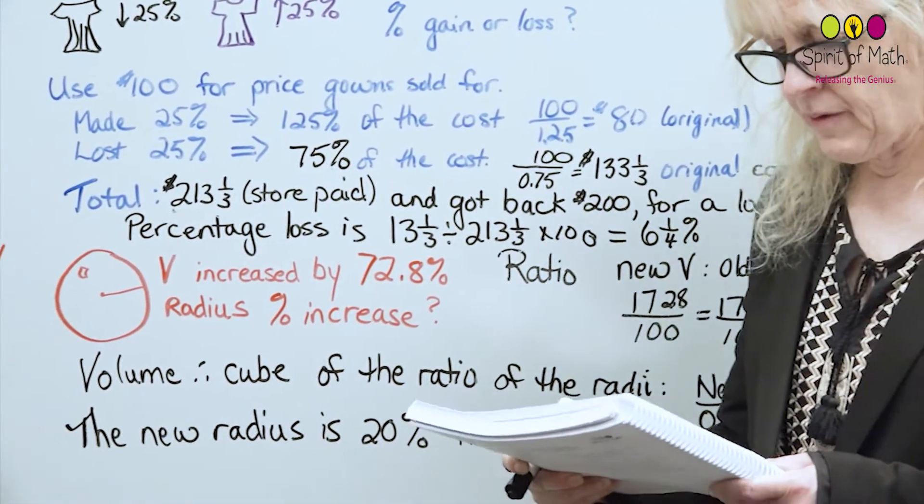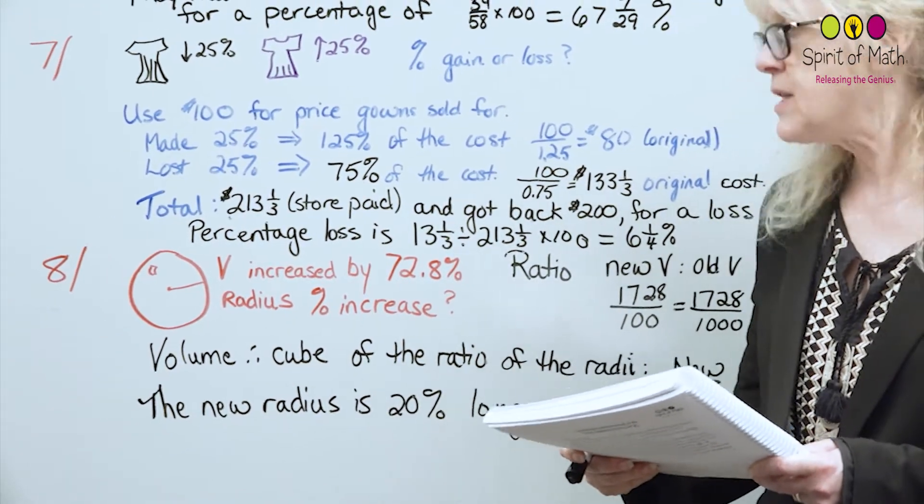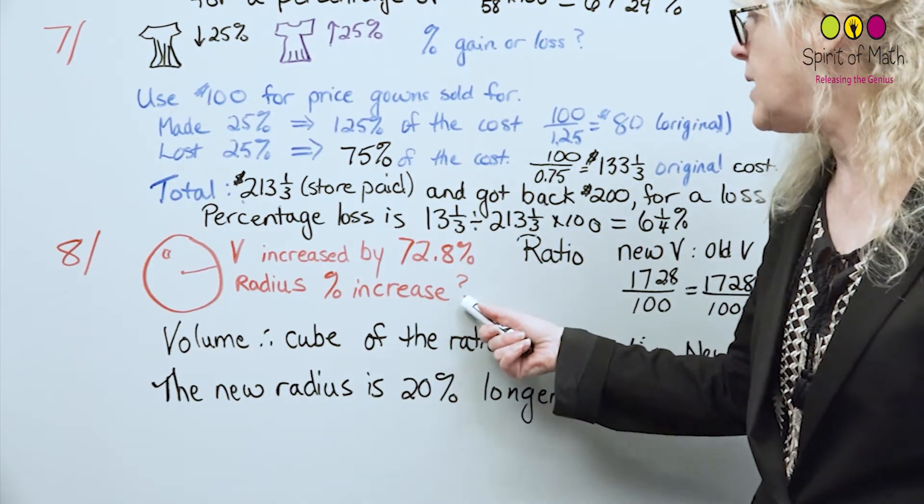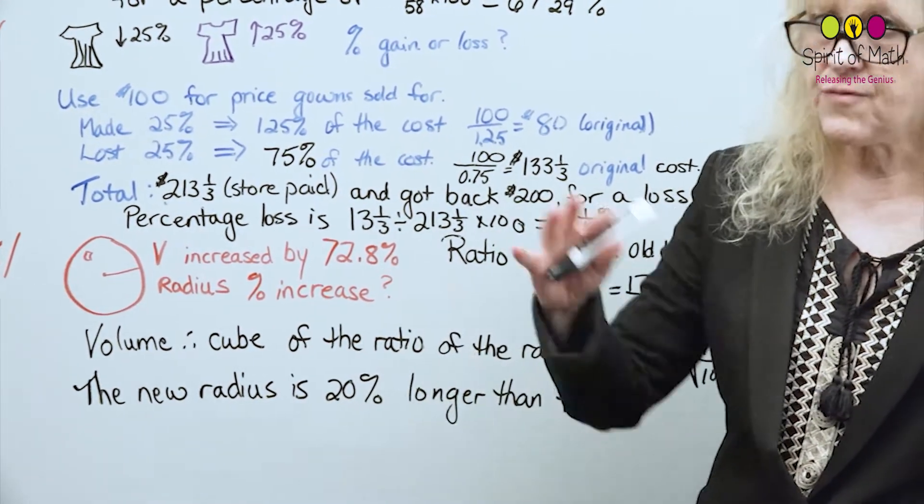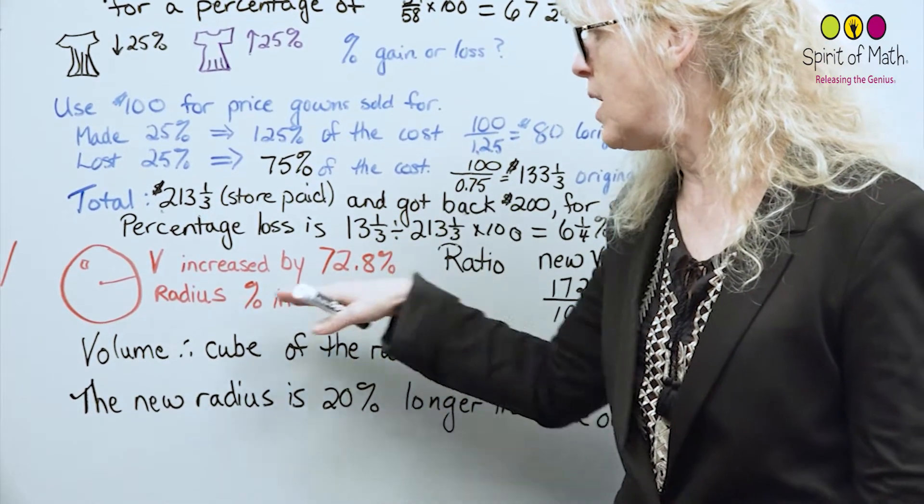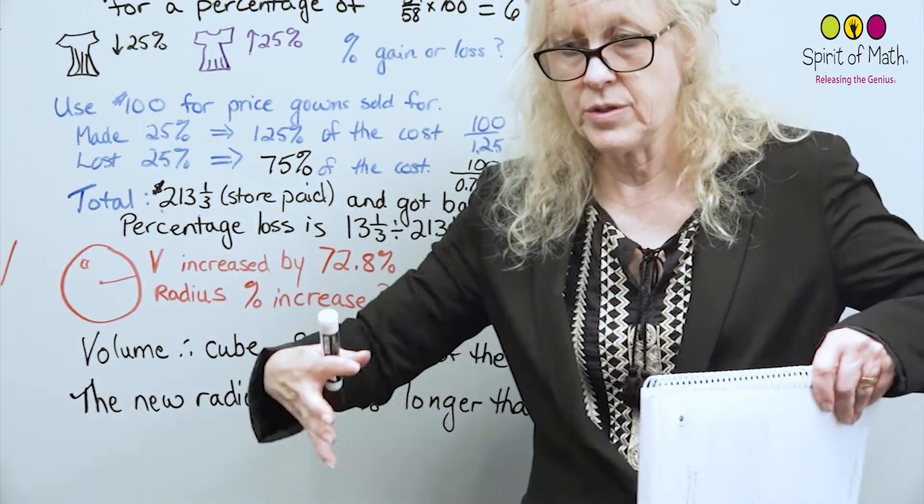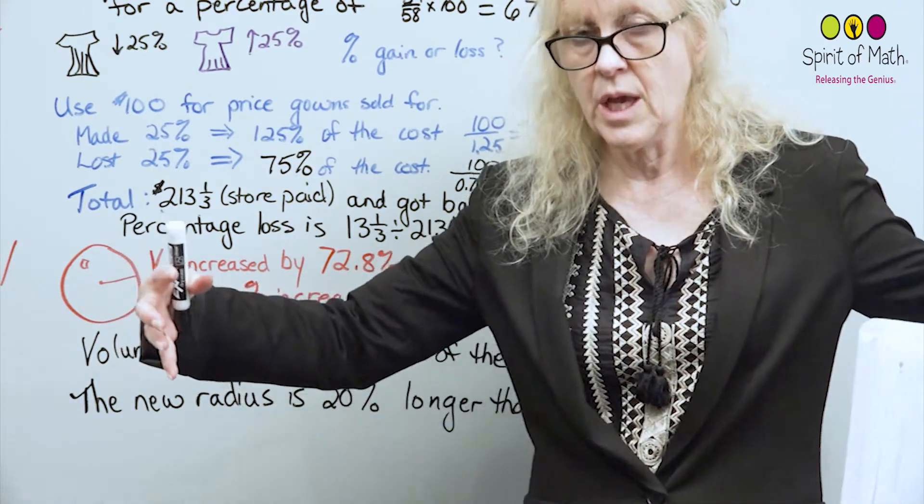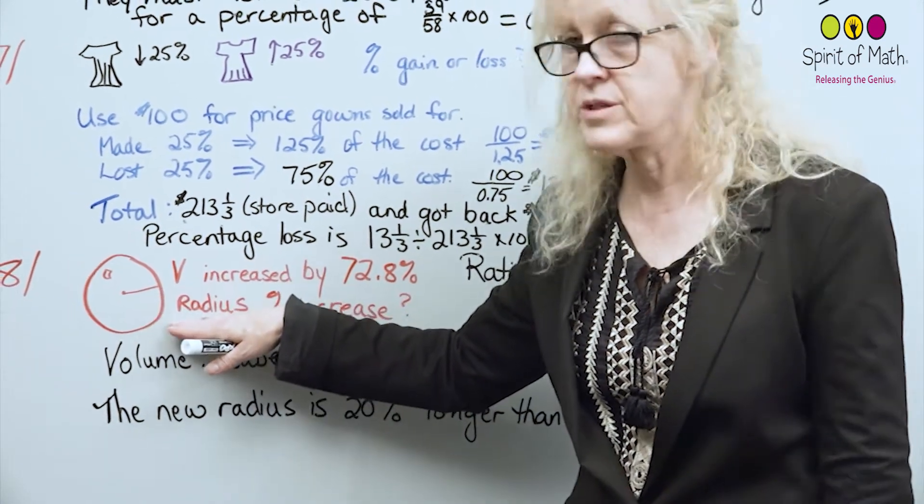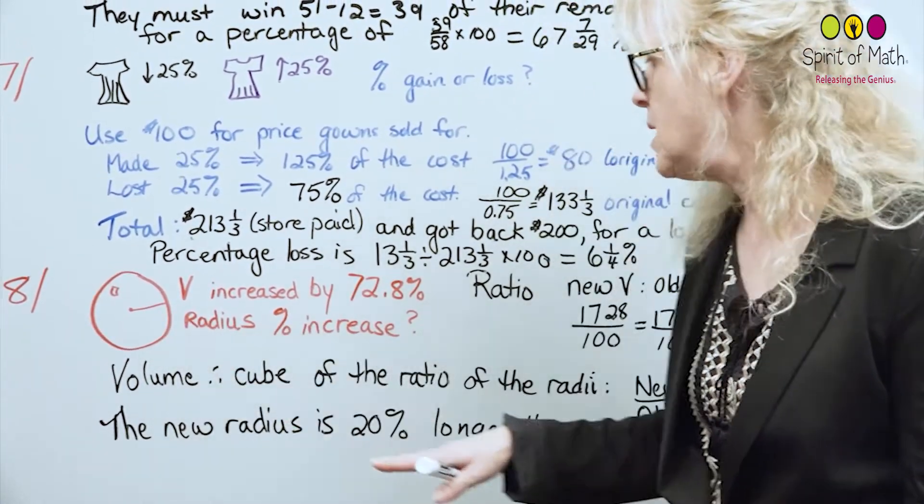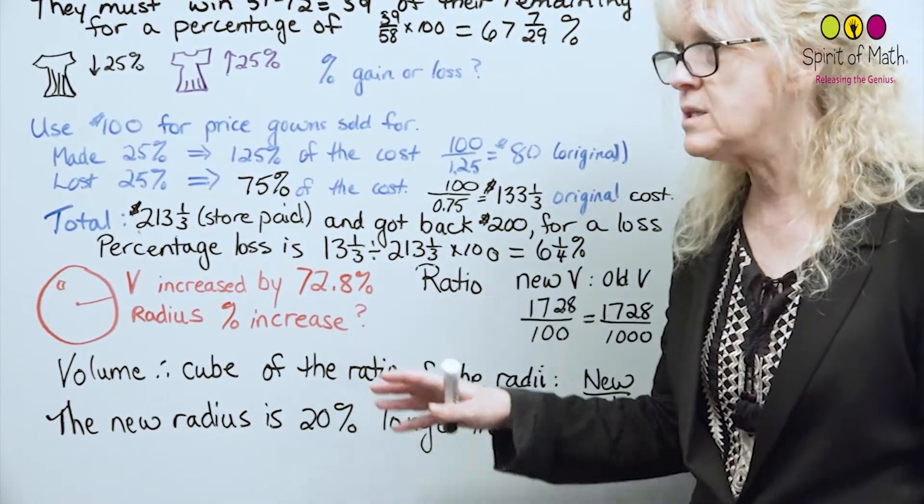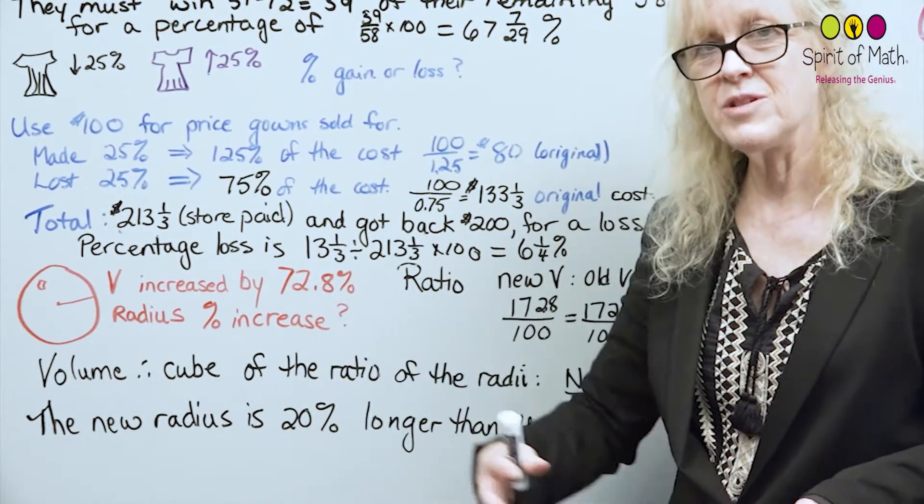Number eight. The volume of a sphere is increased 72.8%. What is the percent increase in the radius? Now a sphere is three-dimensional, so it's going to be the cube of the radius in terms of the amount when you have a percent increase. That's what happens because you're dealing with three dimensions versus one dimension in length. So we want to find out, if it increased by 72.8%, then what happened to it? So we need a ratio.